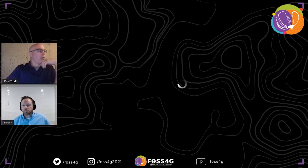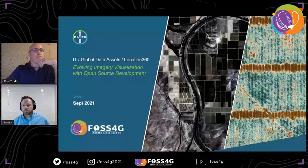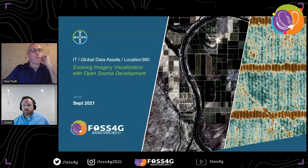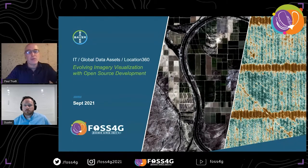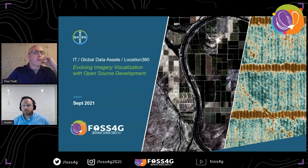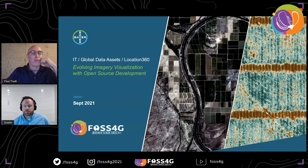Thank you, Josie. Good morning, everyone. My name is Paul Trout. I am the Location 360 imagery lead for Bayer Crop Science. Today I will be joined by Dustin Sampson from Spark Geo. Together we will be presenting the evolving journey of image visualization with open source technologies at Bayer Crop Science.